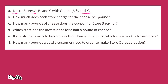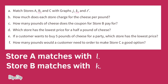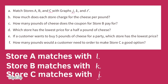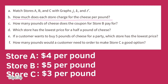Matching stores to graphs: Store A matches with line L, Store B matches with line K, and Store C matches with line J. Store A charges four dollars per pound, Store B charges five dollars per pound, and Store C charges three dollars per pound.